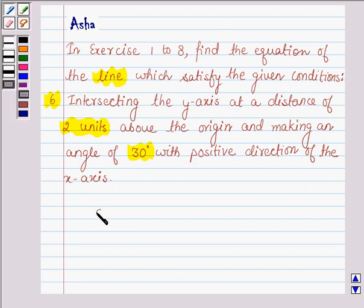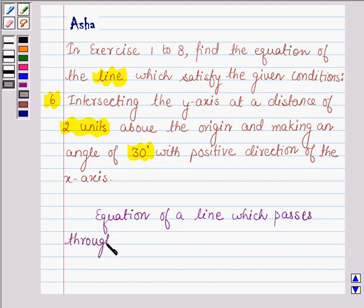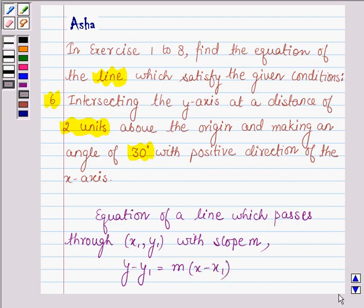First let us learn how do we find the equation of a line which passes through a given point. Let the point be x1, y1 and let the slope of the line be m.